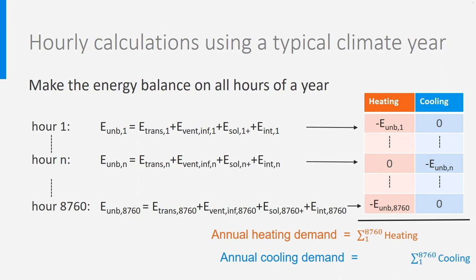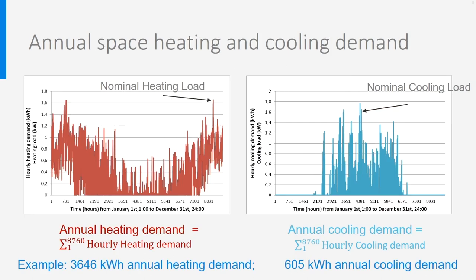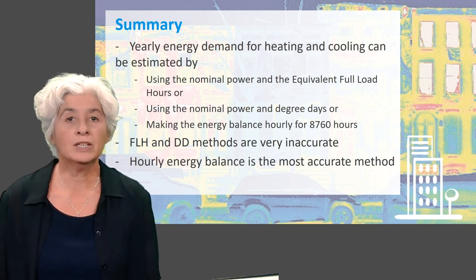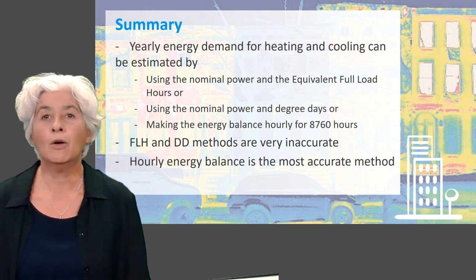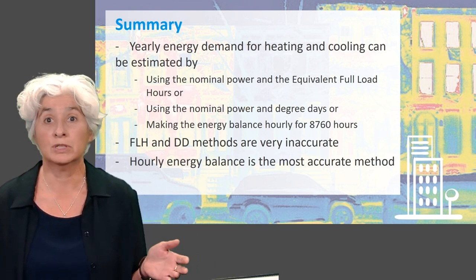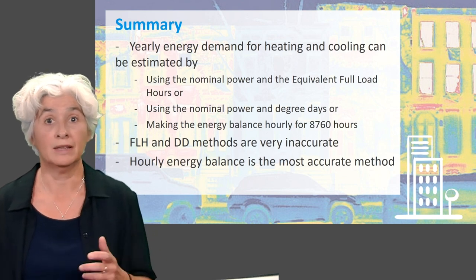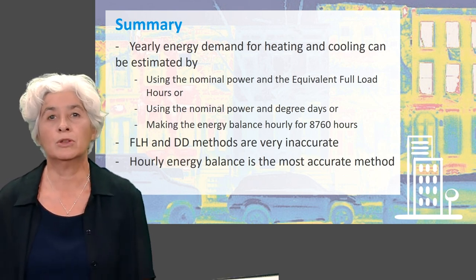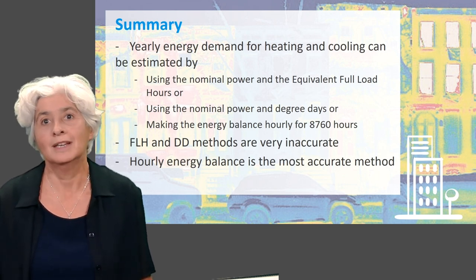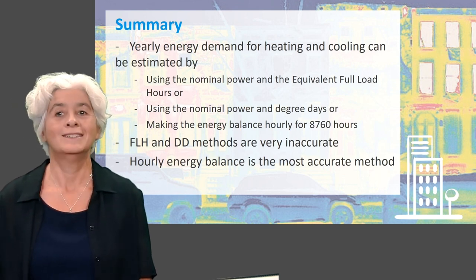Quite easy in the end. The calculations give 3646 kWh annual heating demand and 605 kWh yearly cooling demand, and I also plotted the graphics with all hourly loads. To summarize this lecture, we have seen three different methods to estimate the annual energy demand for heating and cooling: the full load hours, the degree day method, and finally making hourly energy balances for each of the 8760 hours of a year using meteorological data. The full load hours and degree day methods are easy to use as they need very few climate data, only the extreme temperatures and maximum solar radiation, but they are also very inaccurate. That is why making hourly energy balances is the preferred method. Thank you for your attention.